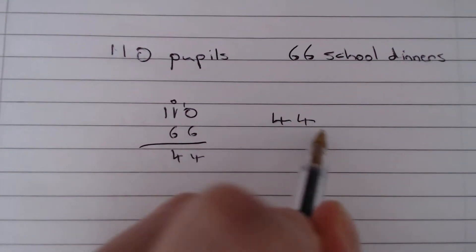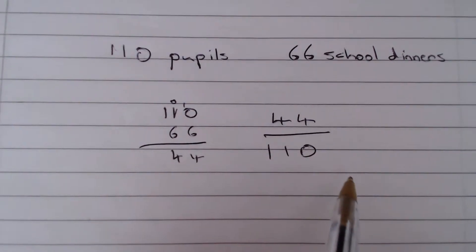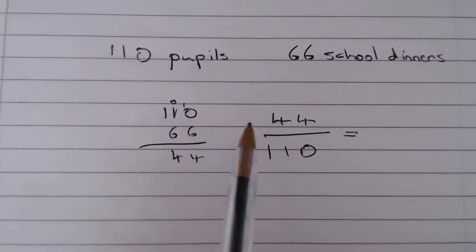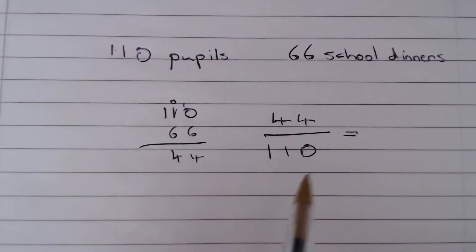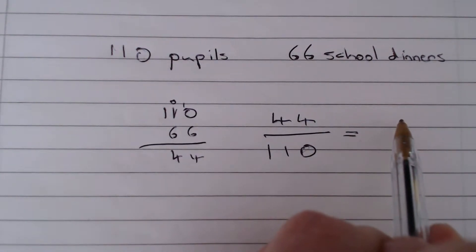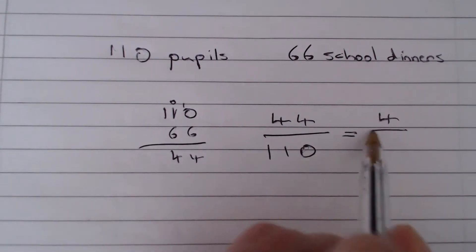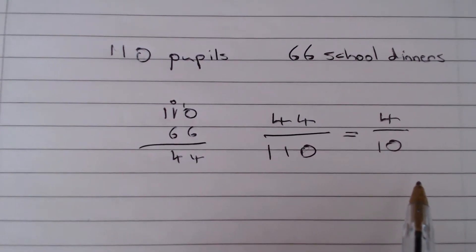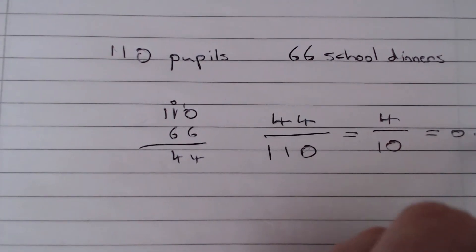That is 44 out of 110, and now we need to reduce this. Well notice 44 and 110 are both multiples of 11. So 44 divided by 11 gives us 4, 110 divided by 11 gives us 10, and 4 divided by 10 is 0.4.